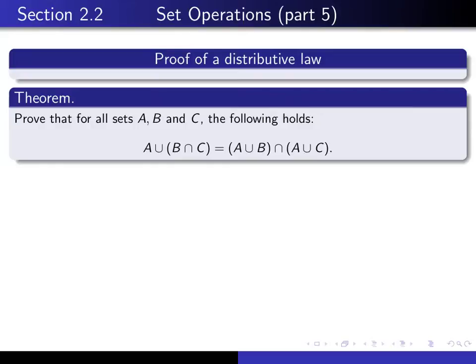It tells you how you distribute a union over an intersection. So it says for all sets A, B, and C, A union (B intersected with C) equals (A union B) intersected with (A union C). So it says that you should take the union of A with each of B and C separately, and you should intersect the results, and that's equivalent to the original union.